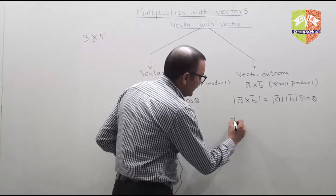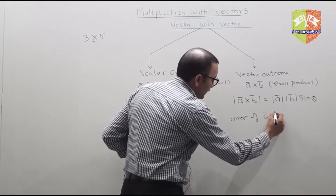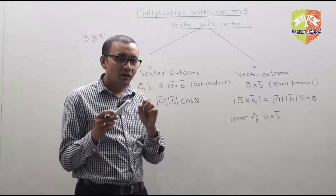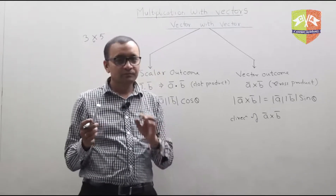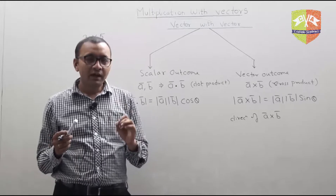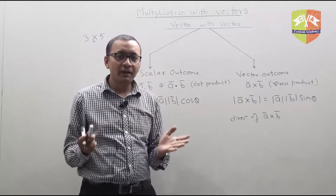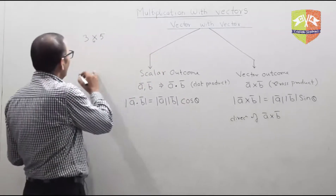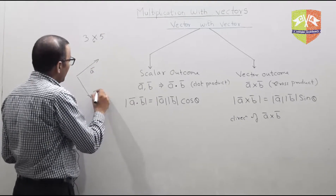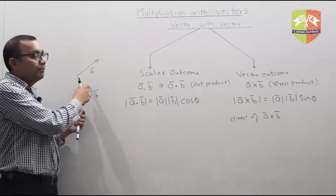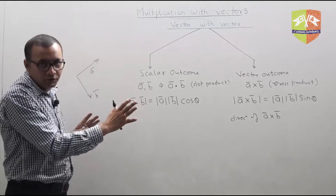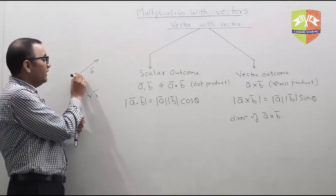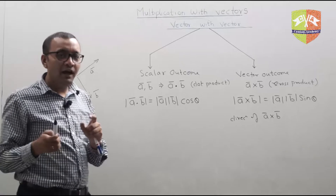Now I have to talk about the direction of a cross b. The direction of a cross b should not be biased toward a or b — it should be independent. The direction of a cross b is a unique direction which is perpendicular to both a and b. So for example, if a is in one direction and b is in another, the direction of a cross b will be perpendicular to both. If both a and b are in the plane of the board, then a cross b should be perpendicular to the board. But perpendicular to the board there are two directions — one coming out of the board and one going into the board — so we have still not uniquely defined the direction.